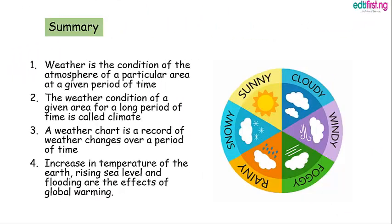Let's now summarize what we have learned. First, weather is the condition of the atmosphere of a particular area at a given period of time. Two, the weather condition of a given area for a long period of time is called climate. Three, a weather chart is a record of weather changes over a period of time. And four, increase in temperature of the earth, rising sea level, and flooding are the effects of global warming.